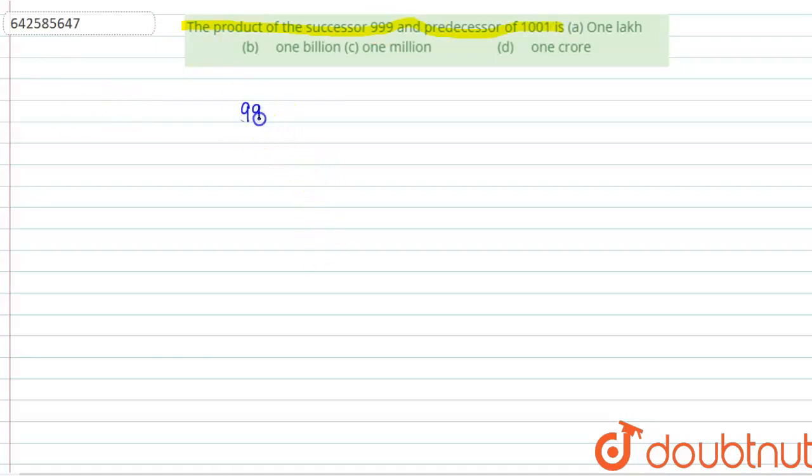So, successor of 999 can be found by adding one, so we get 1000. And predecessor is the previous number, the number which comes before.